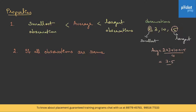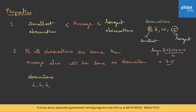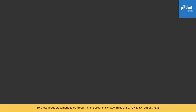Property 2: if all observations are the same, then the average will also be the same as that observation. For example, if the observations are 6, 6, 6, and 6, then the average is (6+6+6+6)/4 = 6.